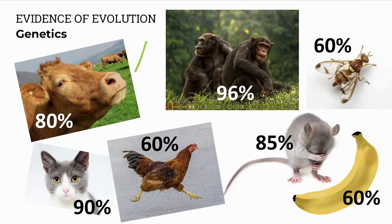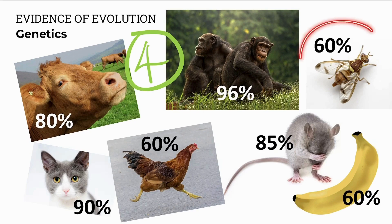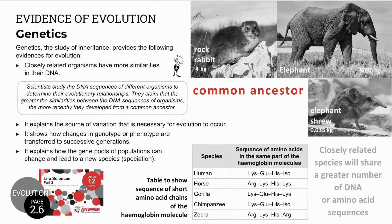Genetics is the fourth evidence of evolution. It shows genetic similarities between closely related species. For example, the DNA of humans is 60% similar to fruit flies, but 96% similar to chimps. It is proposed that the closer the similarities, the closer the relationship and the more recent the common ancestor. The elephant's closest relative is the rock rabbit, as well as the mouse-like elephant shrew. Scientists claim that the greater the similarities in DNA, the more recent the common ancestor.